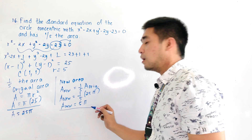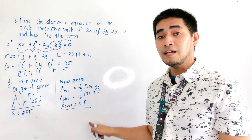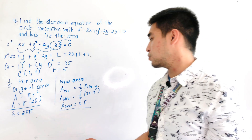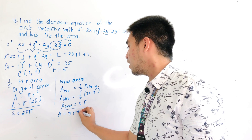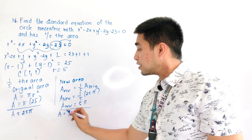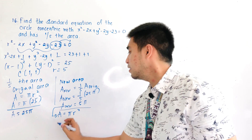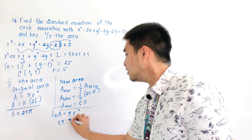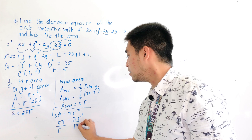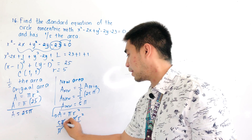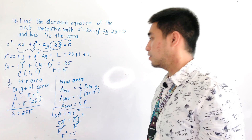We now have our new area. We need to find the new radius using the area formula pi r squared. Substitute 5 pi: 5 pi equals pi r squared. Divide both sides by pi. Therefore, r squared equals 5.